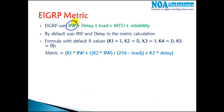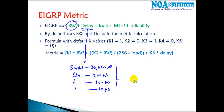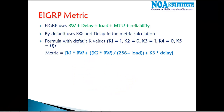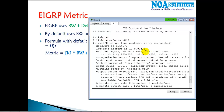Delay is generally calculated in microseconds. The default delay on a serial link is 20,000 microseconds. The more bandwidth you have, the less delay there will be. On Ethernet links it's 200 microseconds, on Fast Ethernet it's 100 microseconds, and on 1 Gigabit links it's 10 microseconds. These are the default delay values, and we can change delay as well.